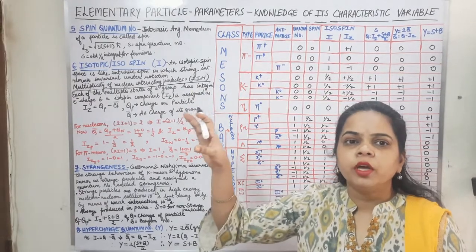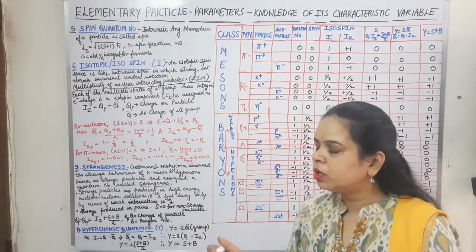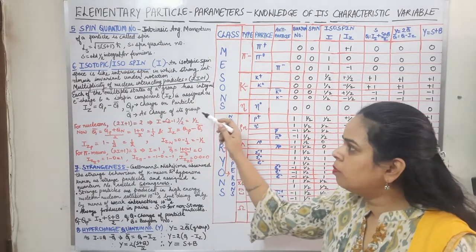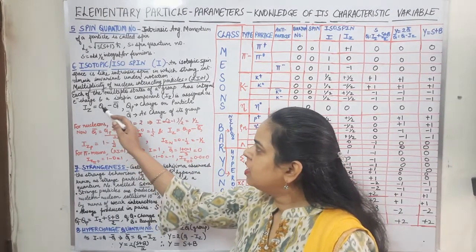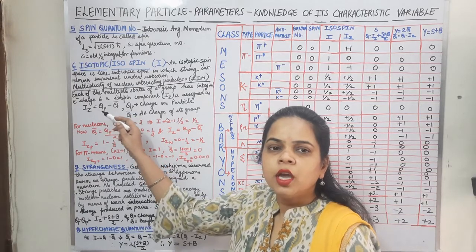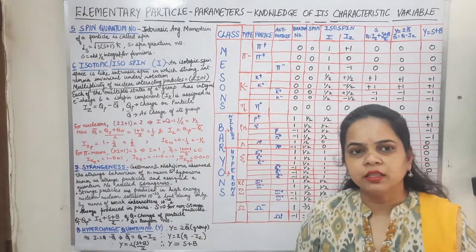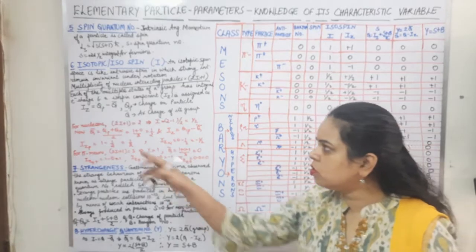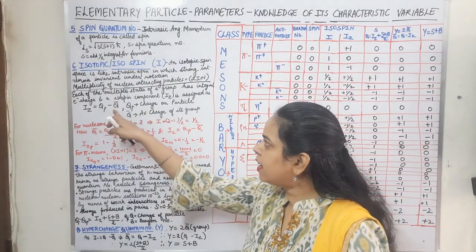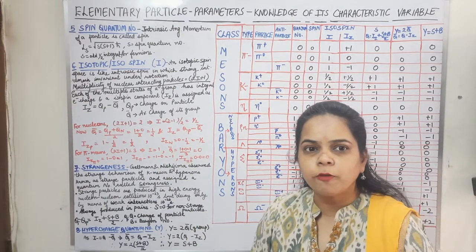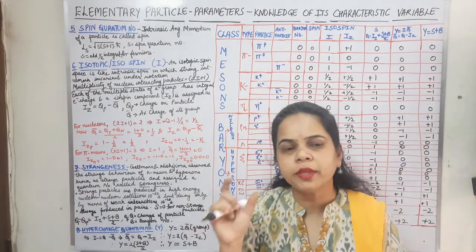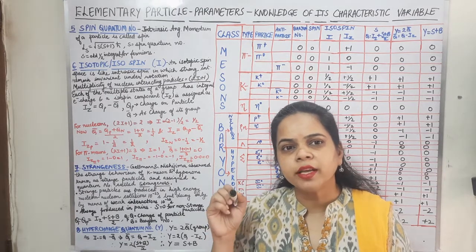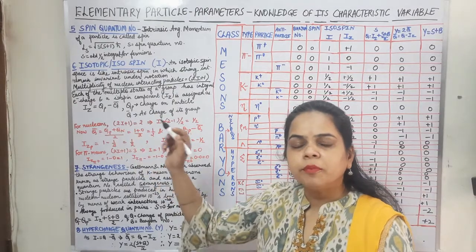I is the isotopic spin for a particular group, whereas the isospin Iz is for the particular particle of that group. We can calculate the Iz component — the isospin for a particular particle — by the formula: Iz equals Qp minus Q-bar. Qp is the charge on the particle, carrying positive or negative charge in multiples of electronic charge. Q-bar is the average charge on that particular group of particles. For the nucleons, there are two particles: proton and neutron. We do not count antiparticles in the group.